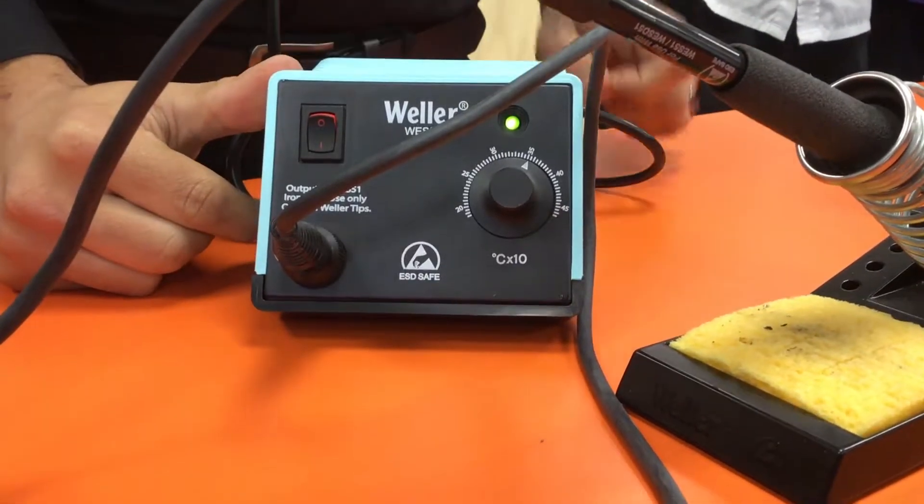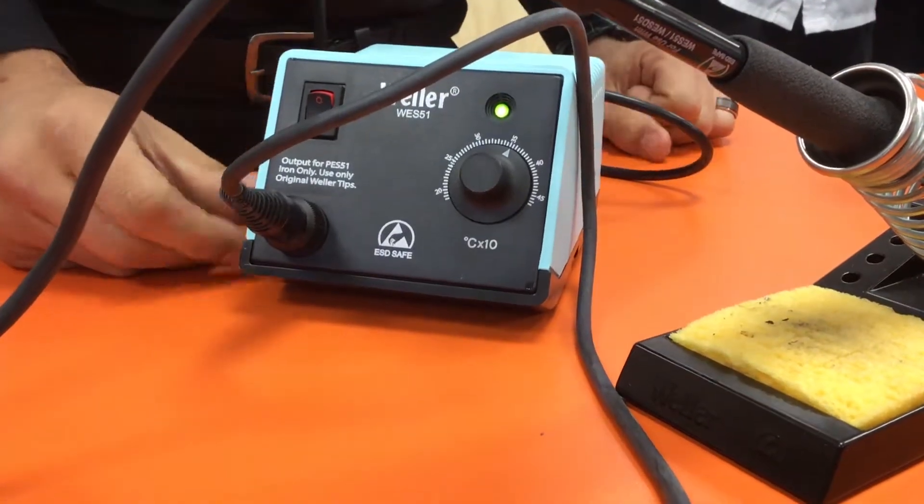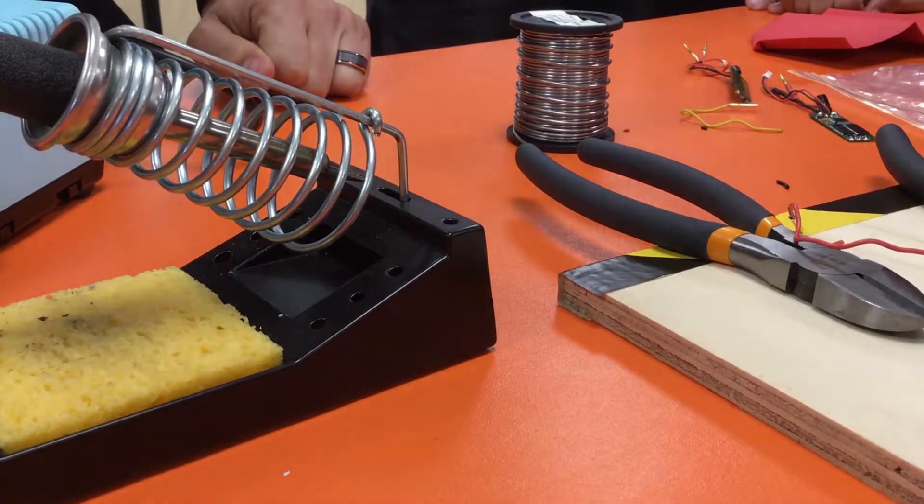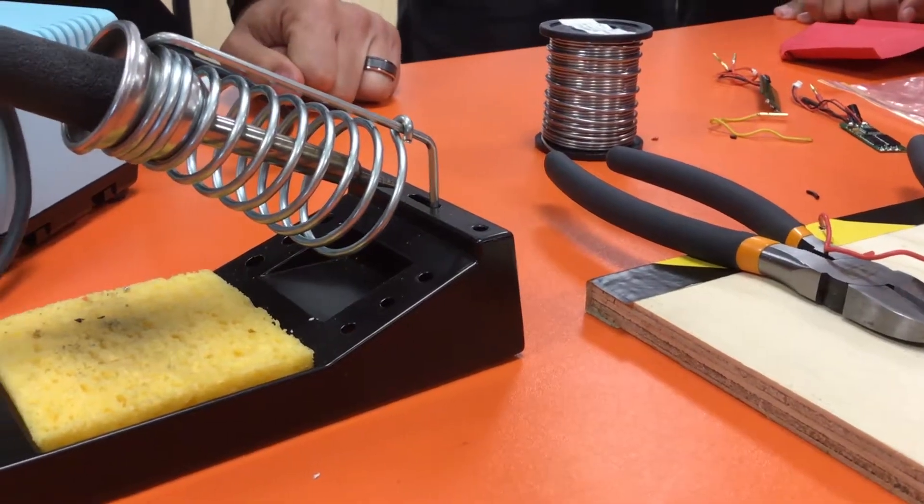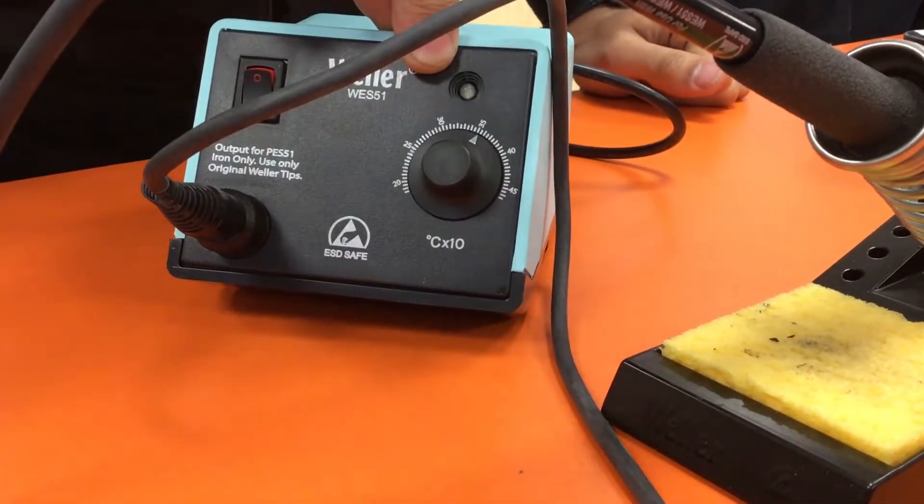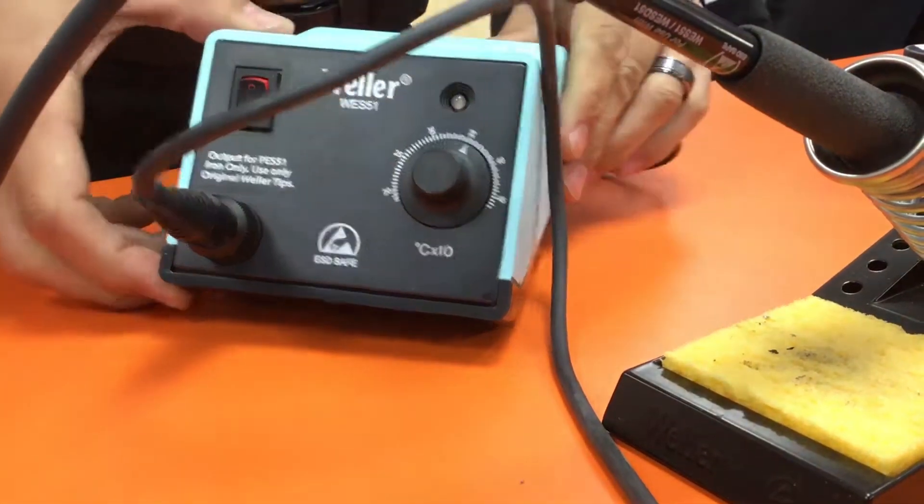Once it's flashing, it means it's hot and obviously pointy end, you don't really want to touch it ever. Generally, if you just don't ever touch it, then it's not going to matter if it's hot or cold. Once this gets to heat or disco light, that means it's that temperature and it's ready to go.